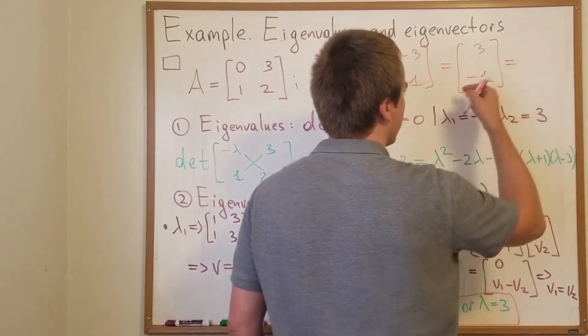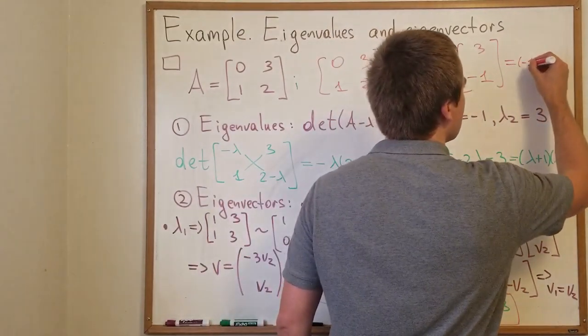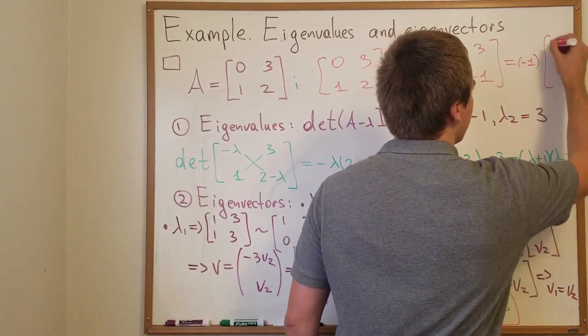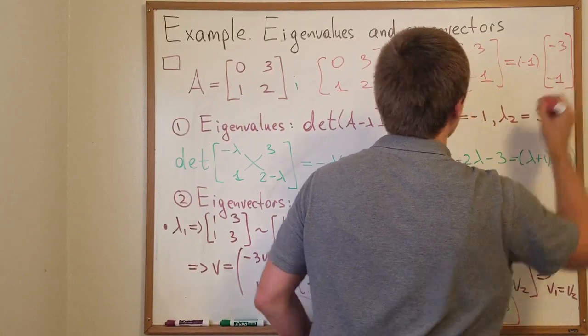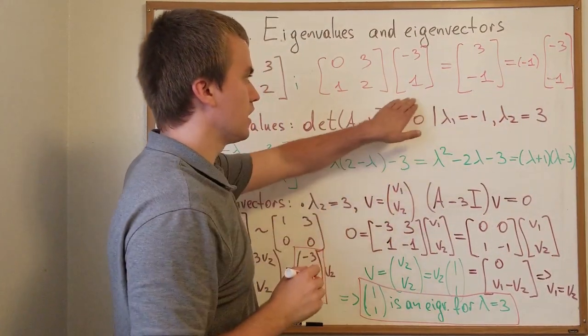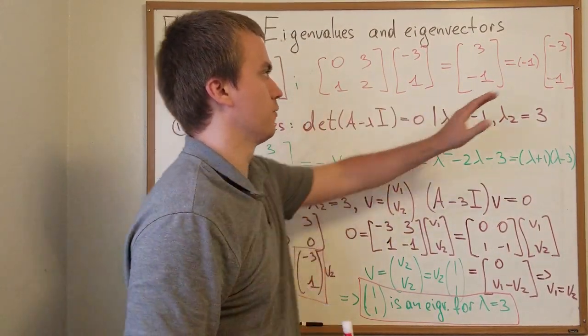If I'm going to factor negative 1, I can see it exactly equals to negative 3 and 1. Yes, indeed. So this vector is an eigenvector with eigenvalue negative 1.